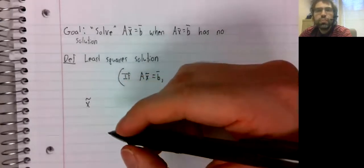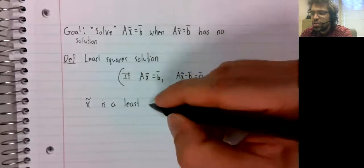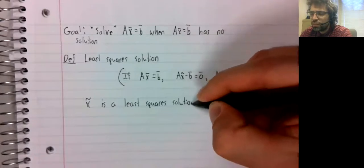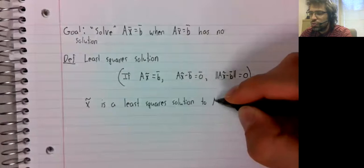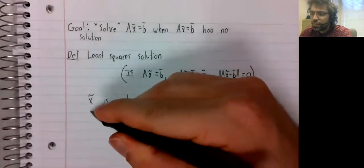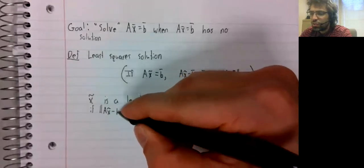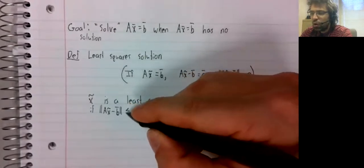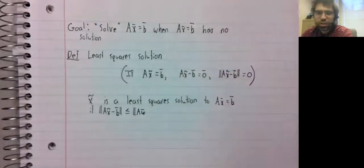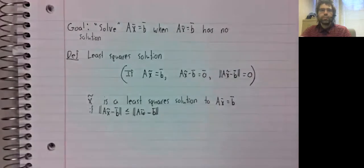But maybe we can make it small. x tilde is a least squares solution to Ax equals b if the distance between A x tilde and b is as small as possible, less than or equal to the distance of A times any other vector and b.